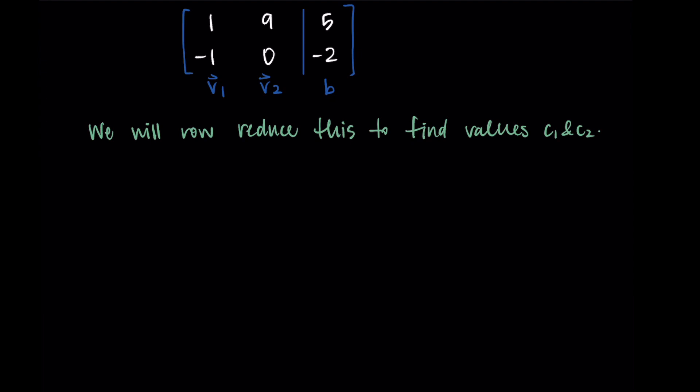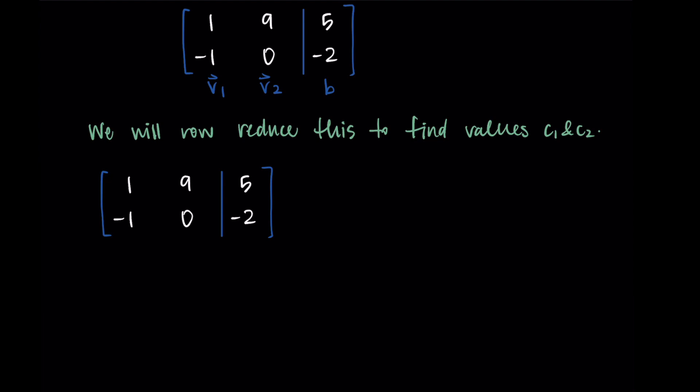We're going to row reduce this to find c1 and c2 in reduced row echelon form. I support using technology for row reduction, but since we're still fairly new with it in this series, I'll go through the steps as another example. If you want practice, pause now and give it a shot, then come back. Otherwise, follow along — or if you prefer, skip ahead to the solved matrix.